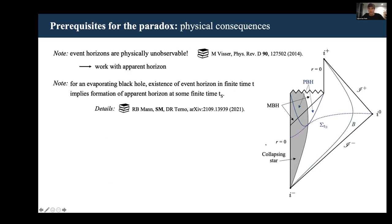Now the question is, what are the physical consequences of having these elements realized? First of all, we should note that event horizons are not observable. That's why usually people work with quasi-local notions like apparent horizons or trapping horizons.